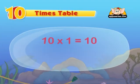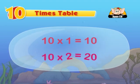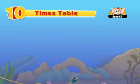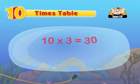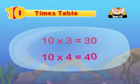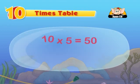10 ones are 10, 10 twos are 20, 10 threes are 30, 10 fours are 40, 10 fives are 50.